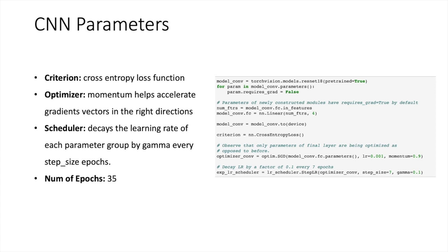There are some very important parameters in our convolutional neural network. The first one is the criterion which decides the type of loss function. So here we chose cross entropy loss function. And the second one is the optimizer, which decides our learning rate and momentum. Momentum helps to accelerate gradients vector in the right directions. And the third one is the scheduler. It decays the learning rate of each parameter group by gamma every step size epochs. So here we chose step size equals to 7 and gamma equals to 0.1. The number of epochs is 35 in our model, which means that we are going to have 35 iterations.